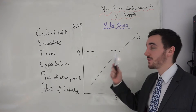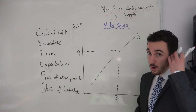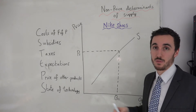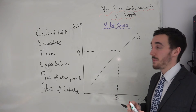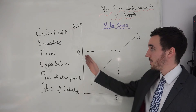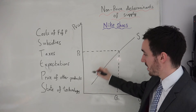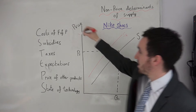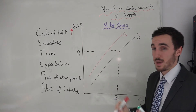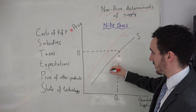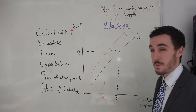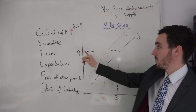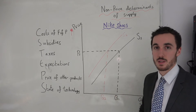Firstly, let's look at the costs of factors of production. Factors of production are the land, labour, capital and enterprise that the firm uses. So let's say the costs of labour have gone up — the firm is not able to supply the same amount as before for the same price. Because their costs have gone up, the firm has to shift its supply curve inwards to S2. At that price level there is now a smaller quantity that the firm is able to supply.